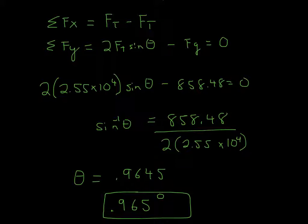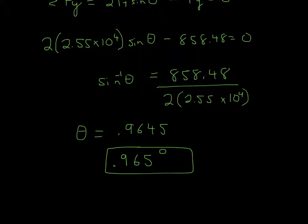Gravity is just mass times acceleration, or mass times gravity, which will be 858.48. So just divide each side by 2 times 2.55 times 10 to the 4th. And remember that this is arcsine, because in your calculator, you'll put arcsine, because we want the theta. We want the degrees.